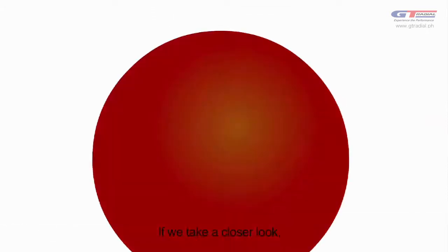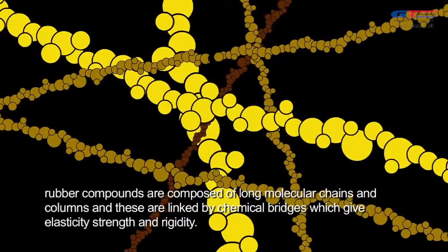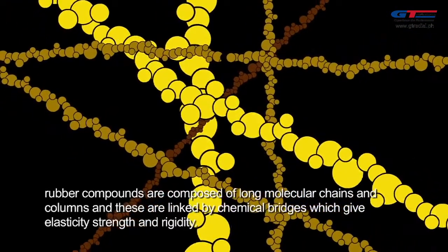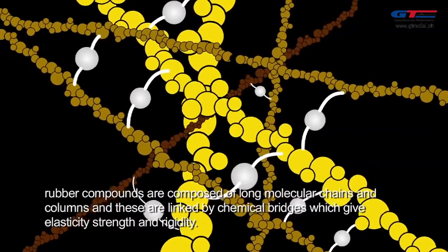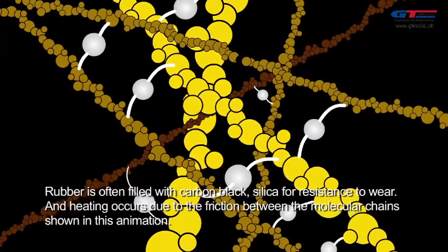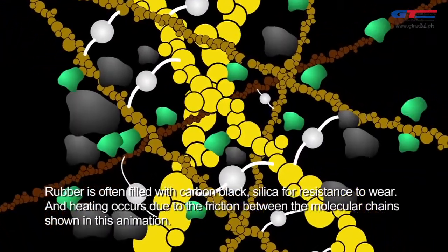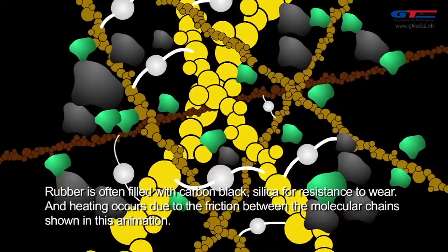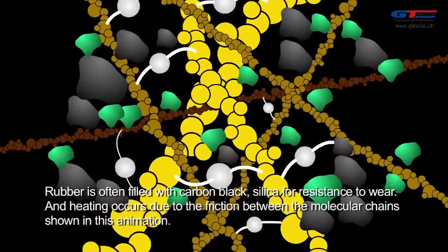If we take a closer look, rubber compounds are composed of long molecular chains and columns, and these are linked by chemical bridges, which give elasticity, strength, and rigidity. Rubber is often filled with carbon black and silica for resistance to wear, and heating occurs due to the friction between the molecular chains shown in this animation.